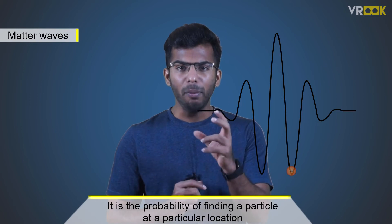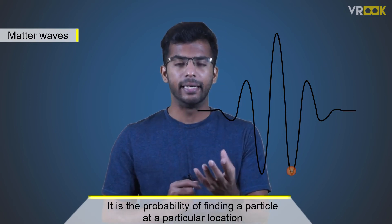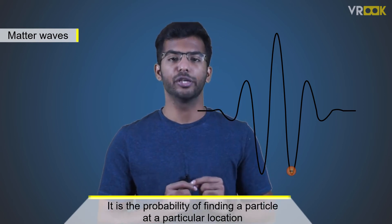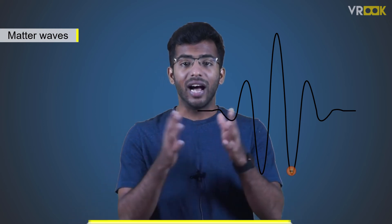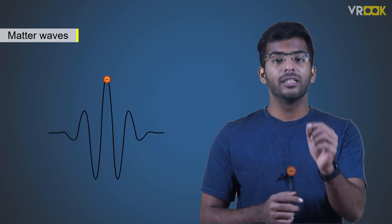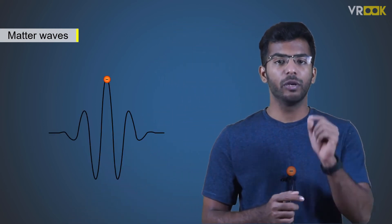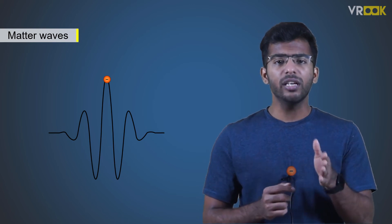But what are these matter waves? It is the probability of finding a particle at a particular location. The larger the amplitude, the larger the probability that the particle like electron will be found there. Similarly, smaller the amplitude, smaller the probability.